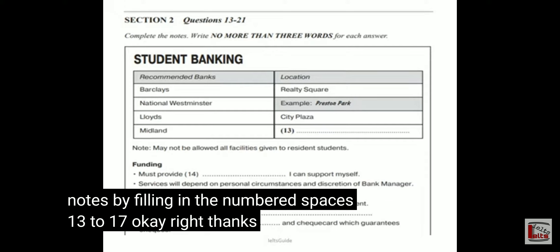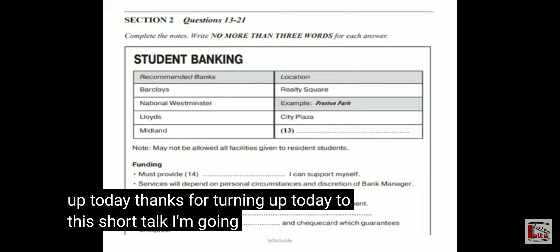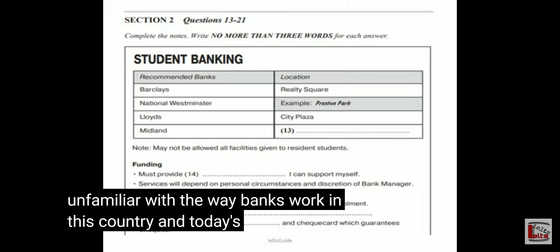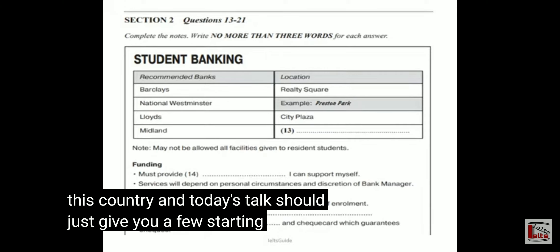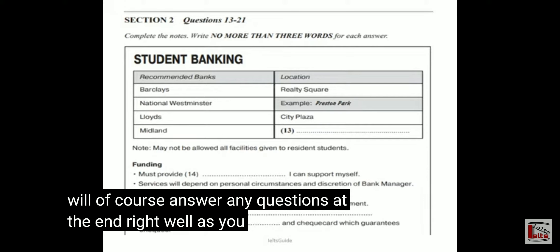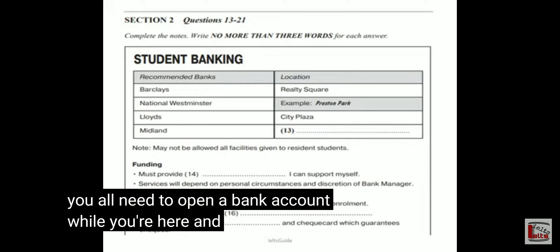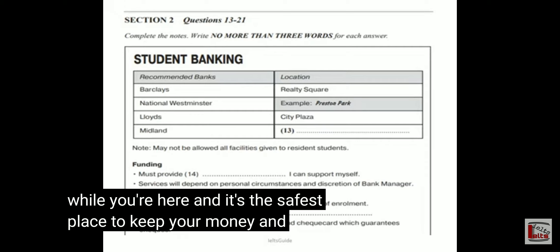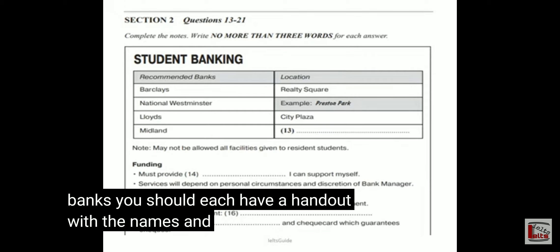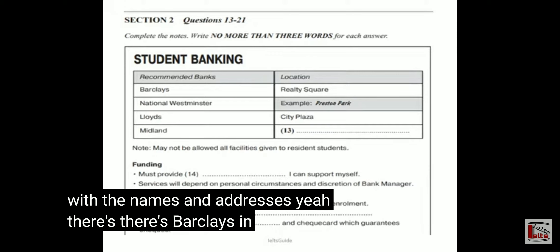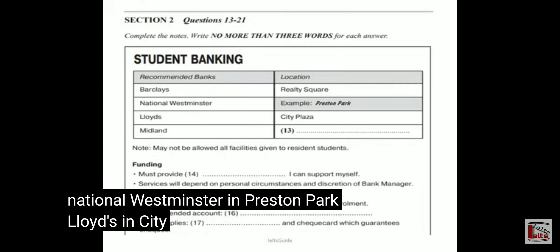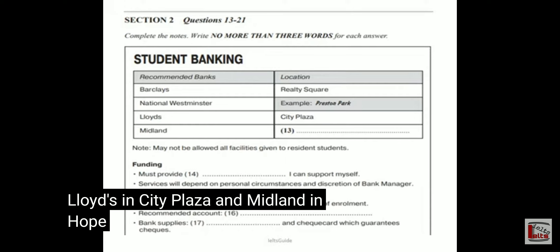OK, thanks for turning up today to this short talk on student banking. Many of you are unfamiliar with the way banks work in this country, and today's talk should give you a few starting points. I'll answer any questions at the end. You'll need to open a bank account while you're here — it's the safest place to keep your money, and it's best to open an account with one of the major banks. There's Barclays in Realty Square, National Westminster in Preston Park, Lloyds in City Plaza, and Midland in Hope Street.